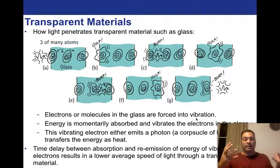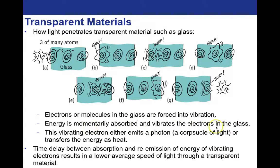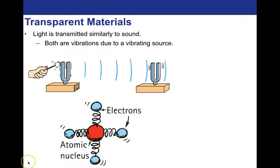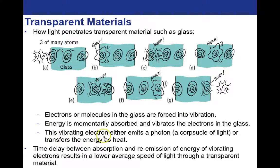And this vibrating electron either emits a photon - we haven't really talked about photons, I'm not going to really spend a whole lot of time talking about it in this lecture, I'm just going to bring it up. It's basically a corpuscle of light or transfers the energy as heat. So it's either going to heat the glass and we'll feel it as heat, or you'll see it as light. And so there's a time delay between the absorption and re-emission of energy of vibrating electrons as it goes through the glass. So it takes a while for this to happen. It's still very fast. It's just not as fast as it's happening in a vacuum. So this time delay results in a lower average speed of light through a transparent material.